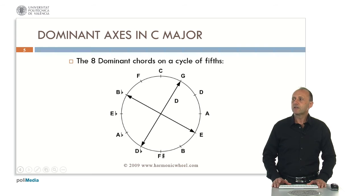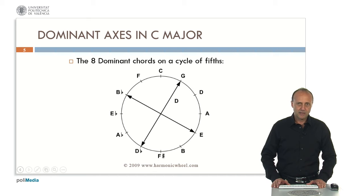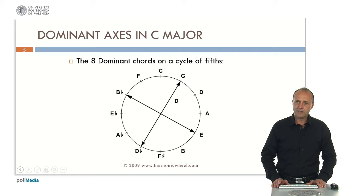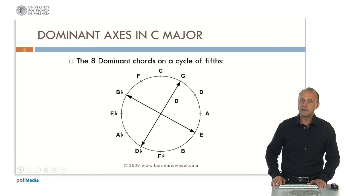If we represent these eight chords on a cycle of fifths, we again obtain two axes. Here we can see that in the primary axis we have G major and D flat major. D flat major is the tritone substitute for G major, also known as the Neapolitan sixth chord in C major.